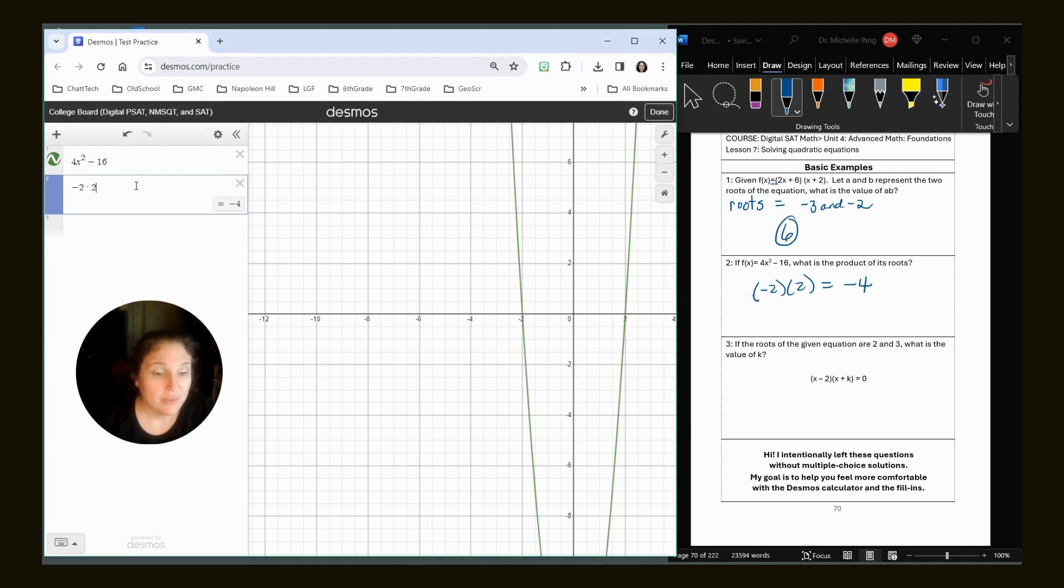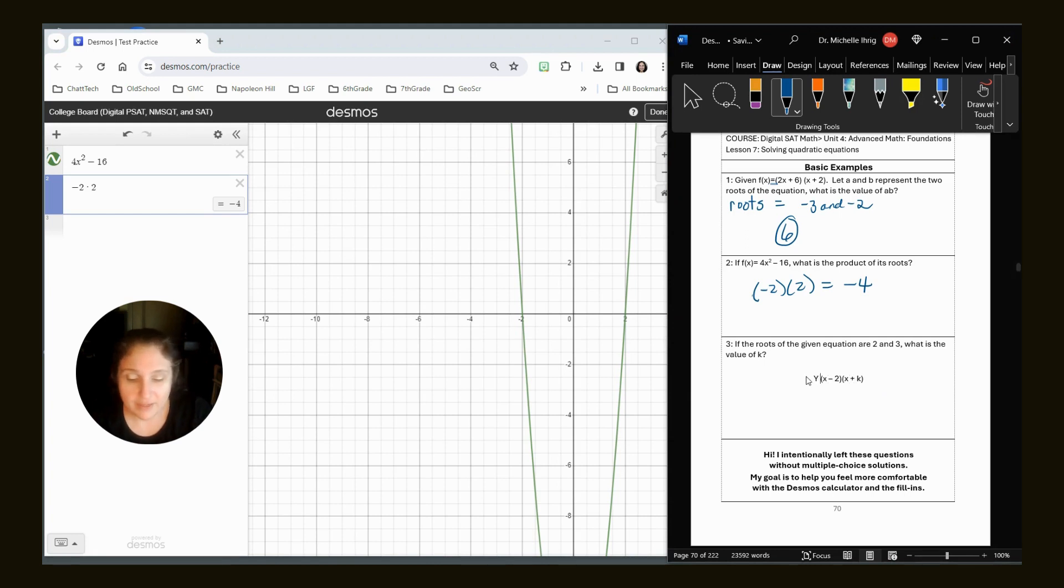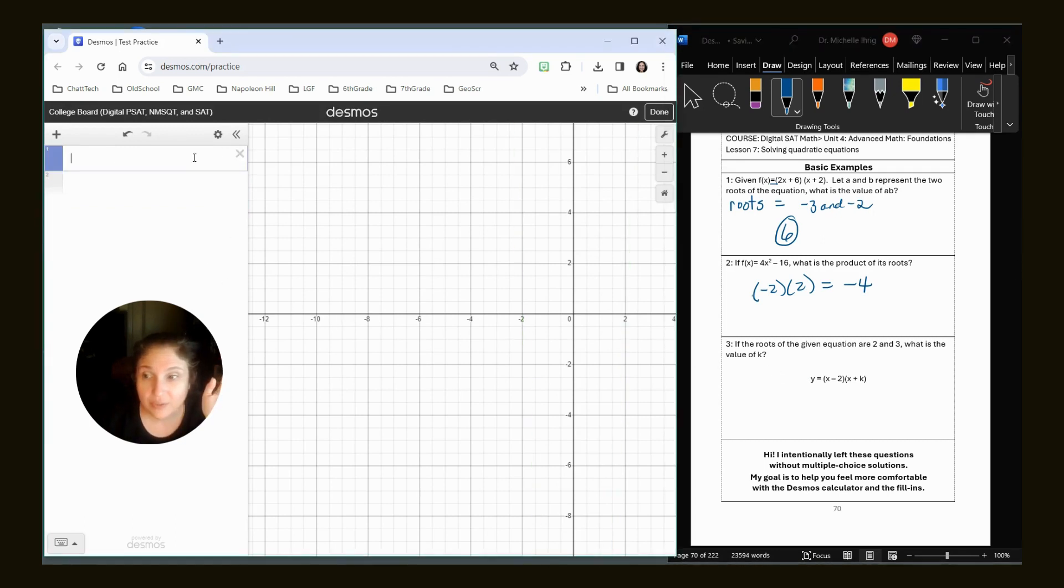All right. If the roots in a given equation are two and three, what is the value of K? So a couple things that we can do first, we're going to type it in. So we have Y equals X minus two times X plus K and look at the amazing thing that just came up: slider tool.